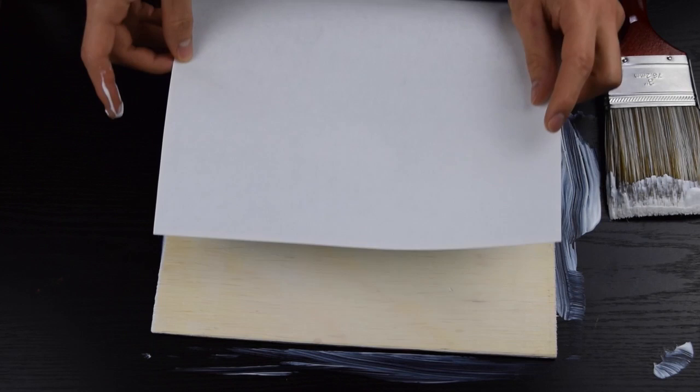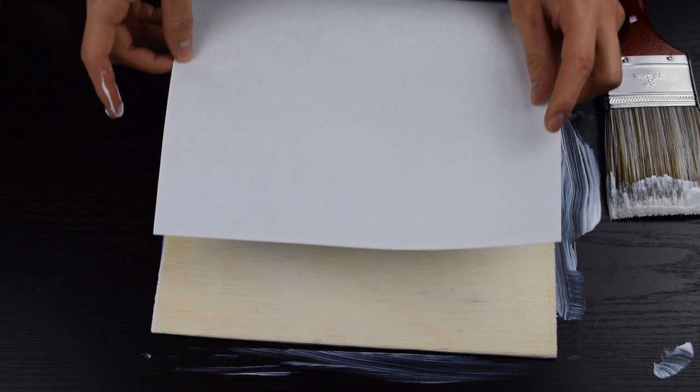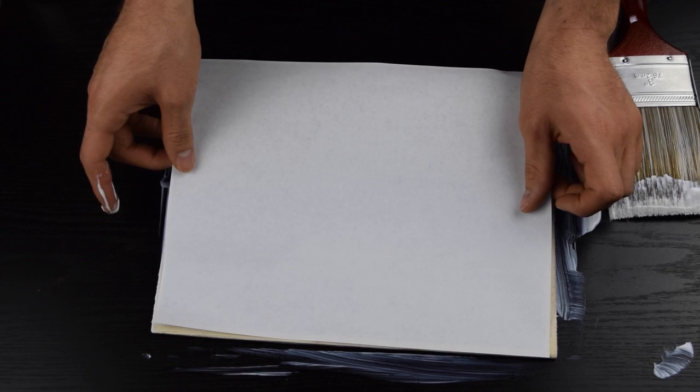Now just take whatever picture you're using and place it on top of the wood, making sure that it is nice and even and that you push out any air bubbles because that will also show on your picture. Just try to get it as smooth as possible.